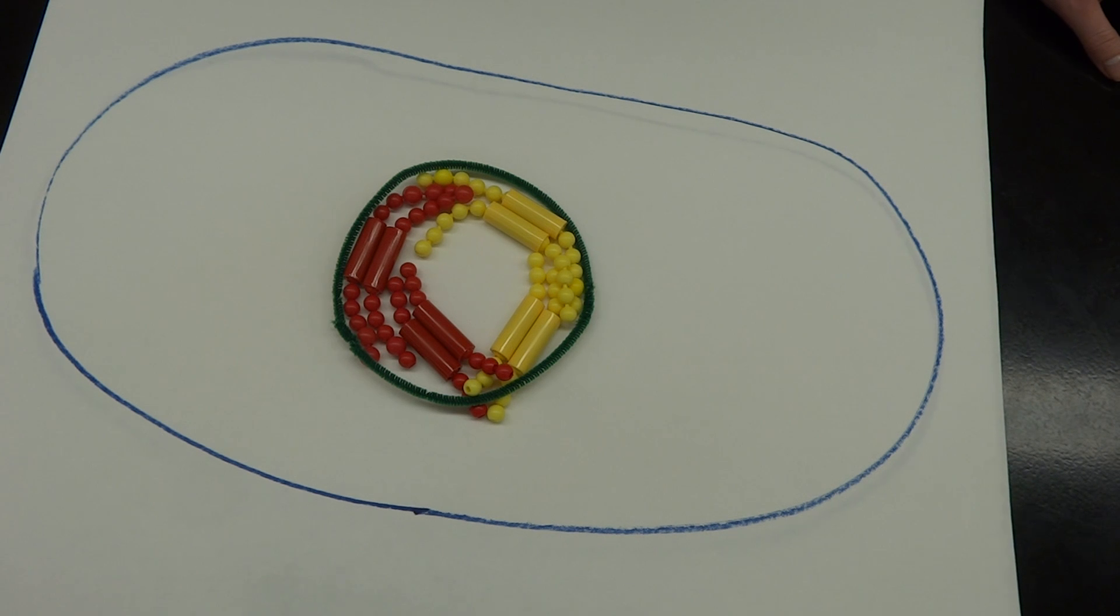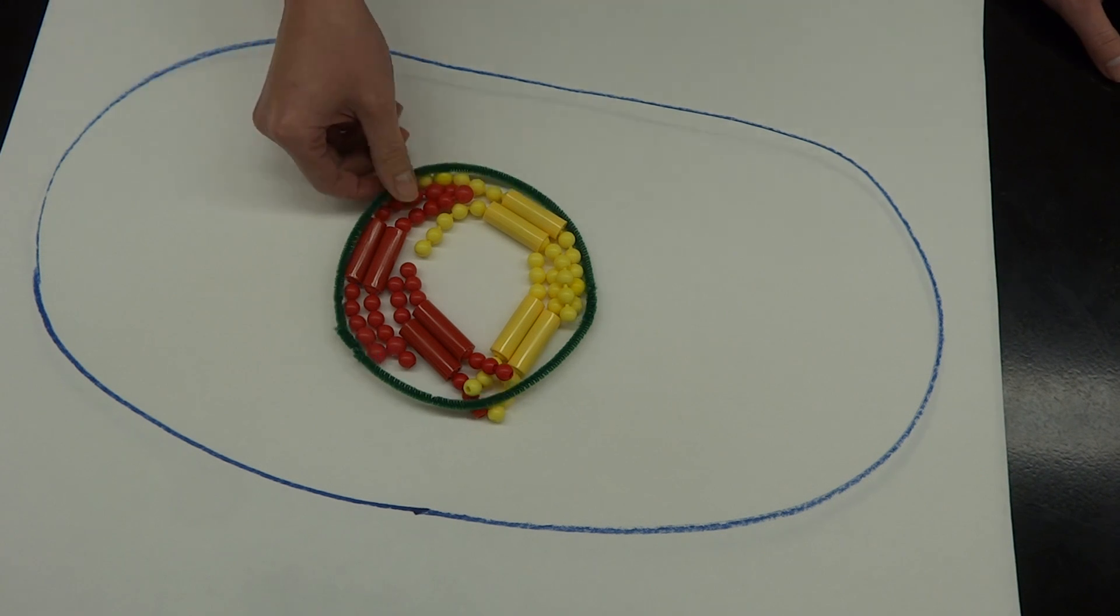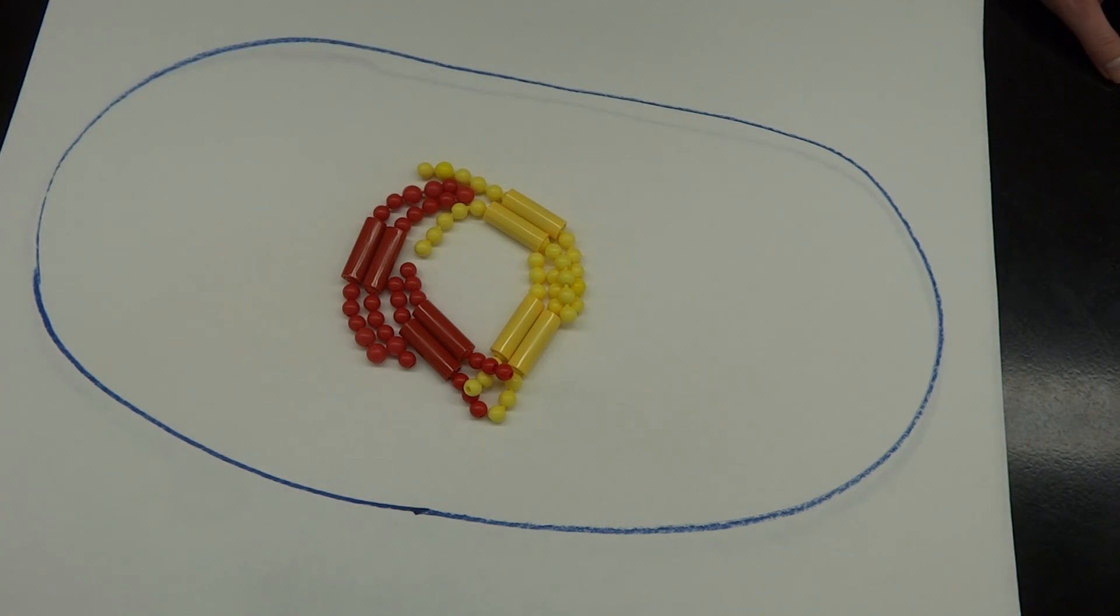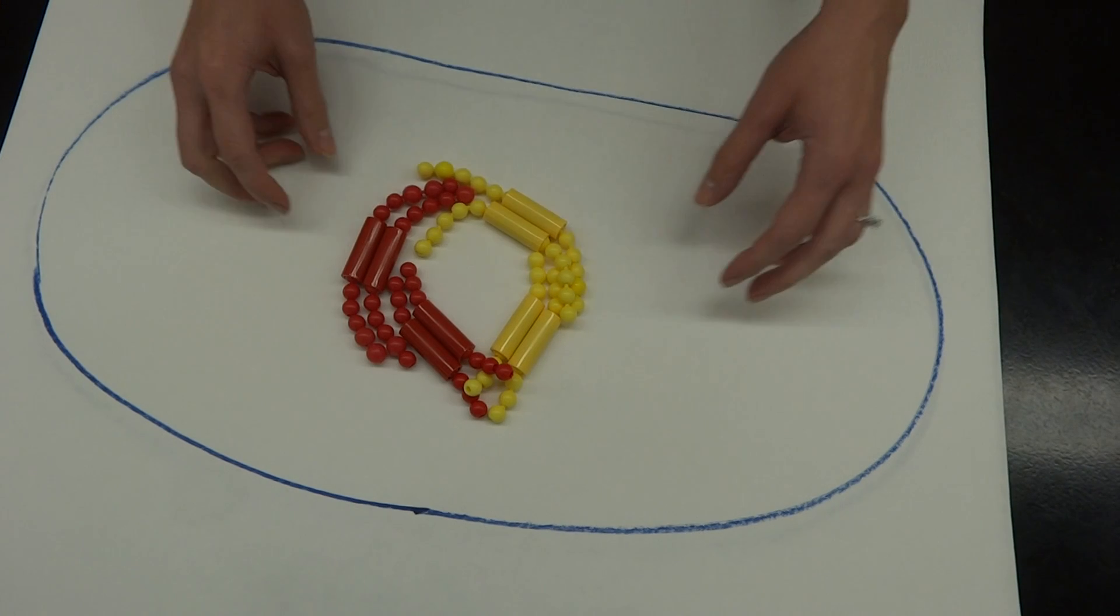So the first stage of mitosis is prophase. Prophase is going to involve our nuclear envelope disintegrating, and the DNA will be condensing in the center of the cell.